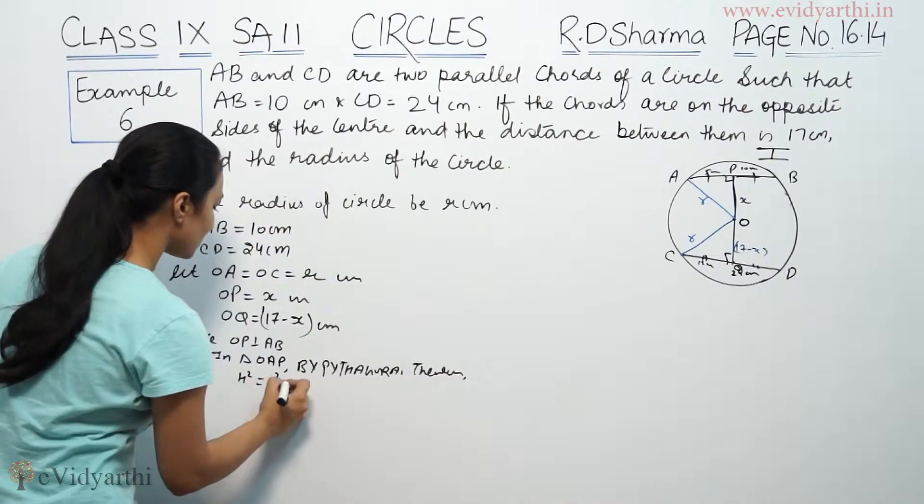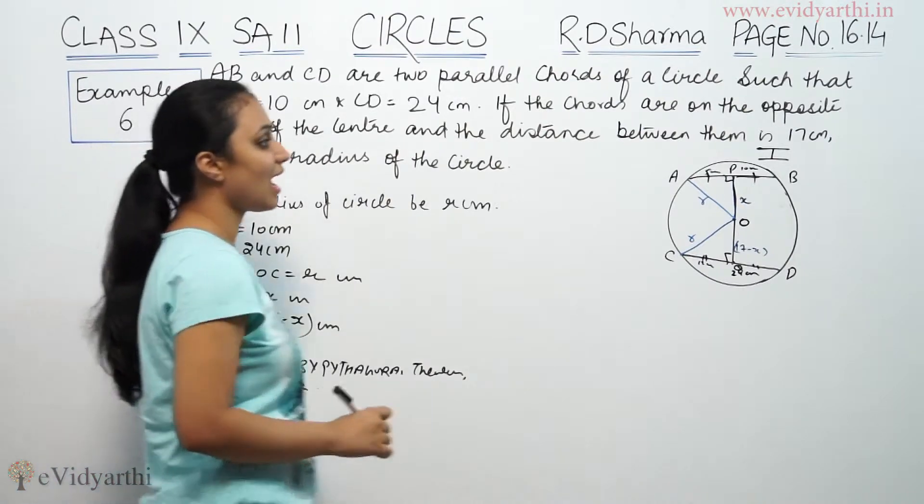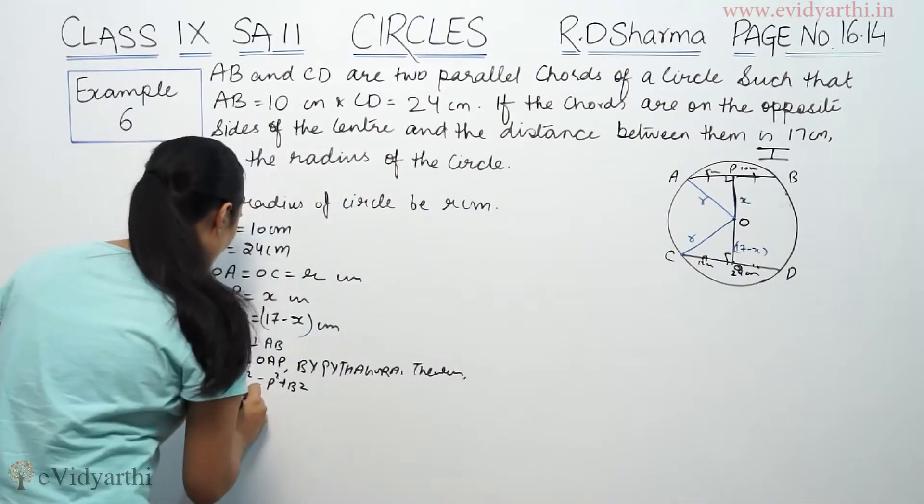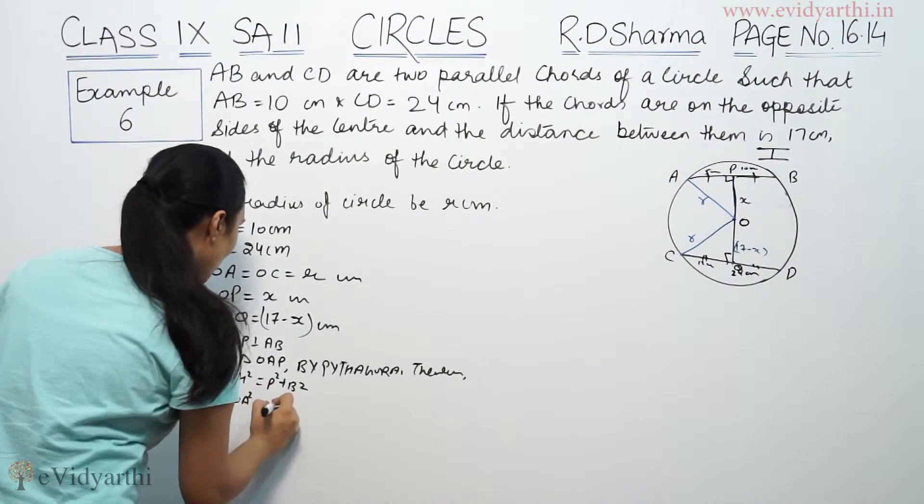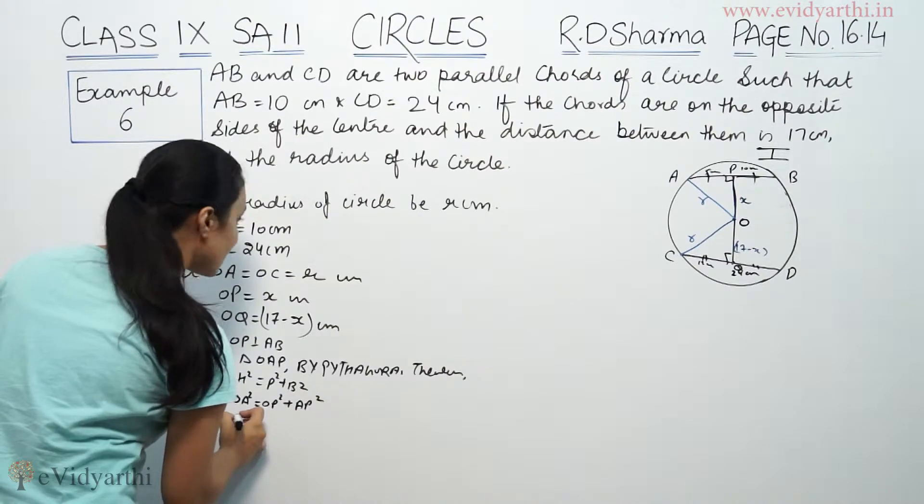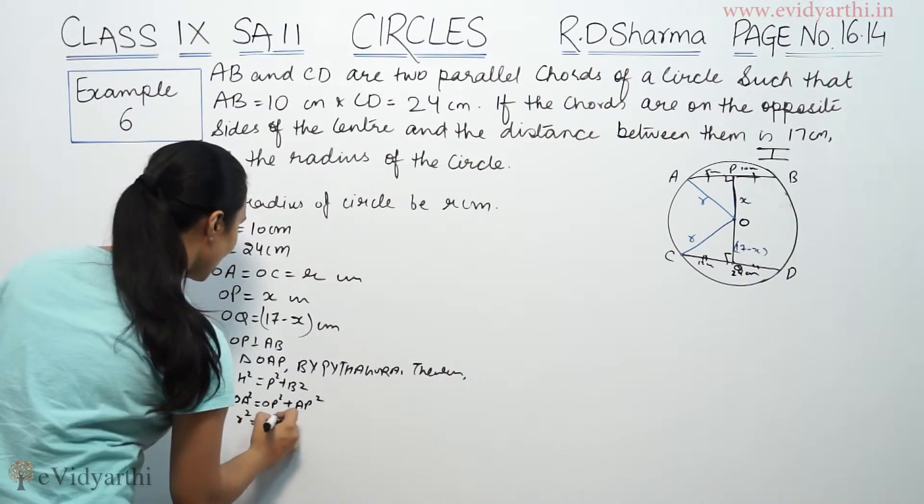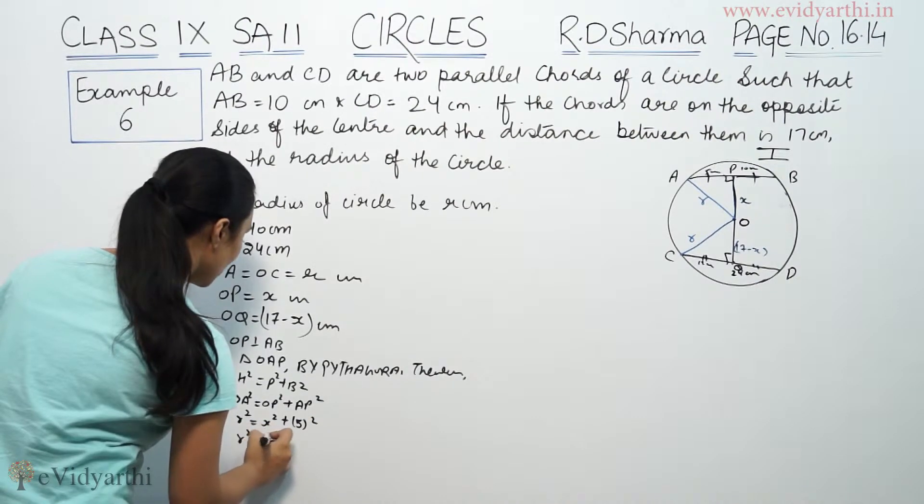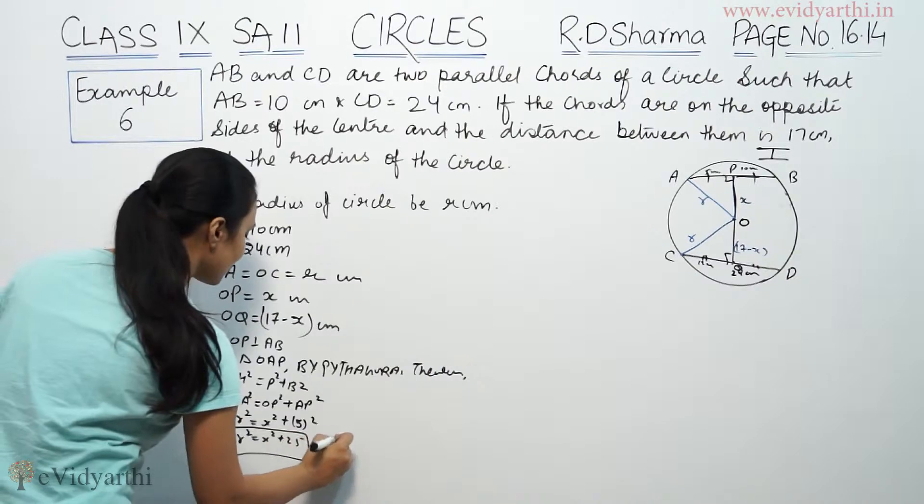Hypotenuse square equals perpendicular square plus base square. Hypotenuse is OA, perpendicular is OP. So OA square equals OP square plus AP square. OA is r square, OP is x square, base is 5 square. So r square equals x square plus 25. This is first equation.